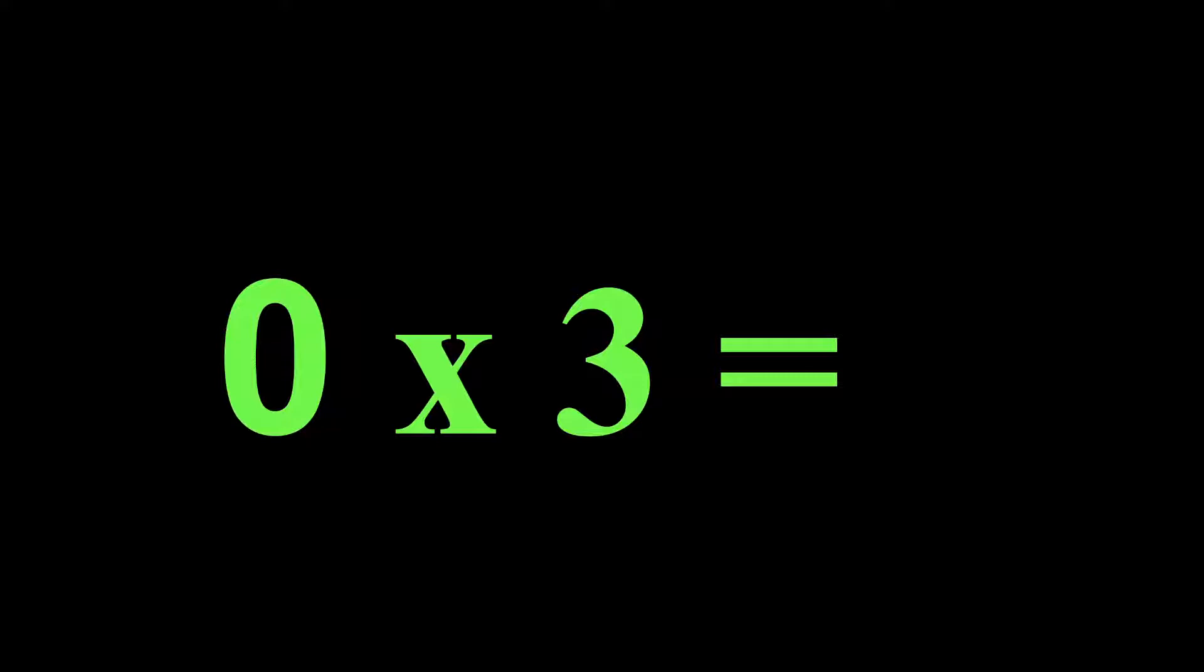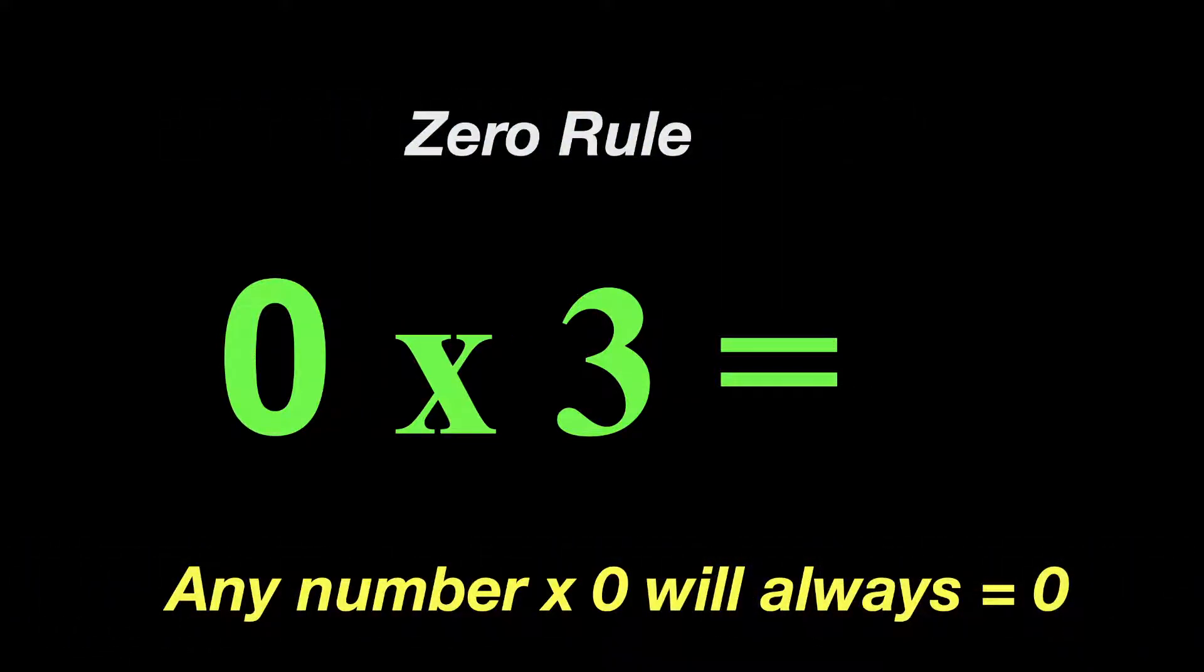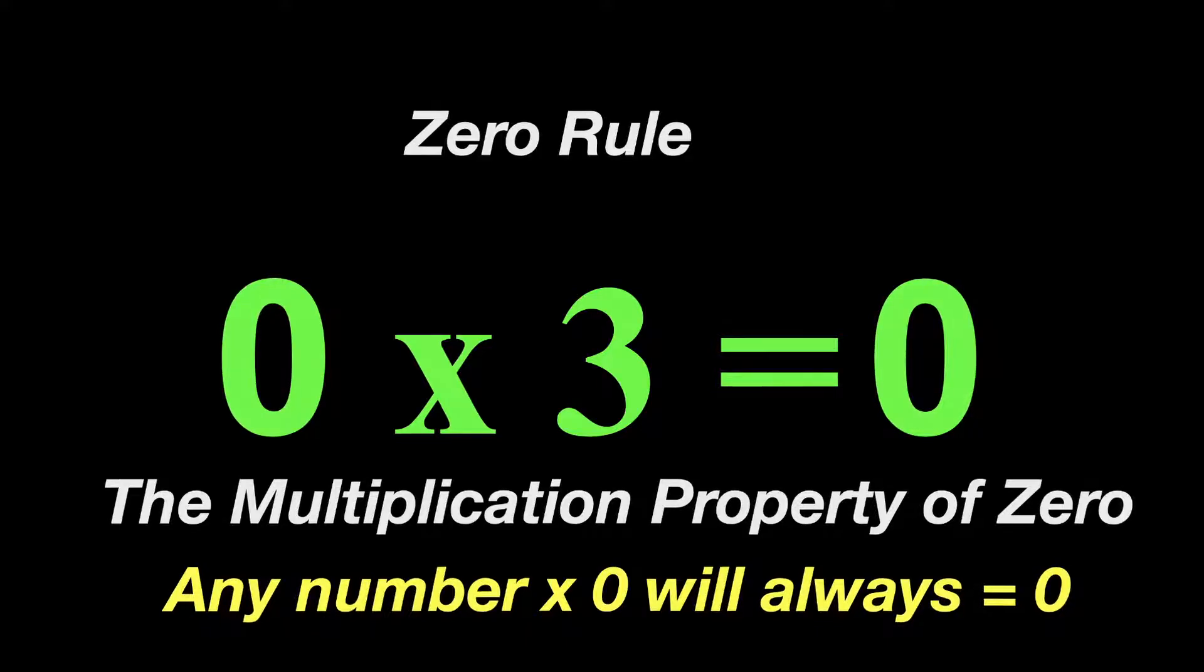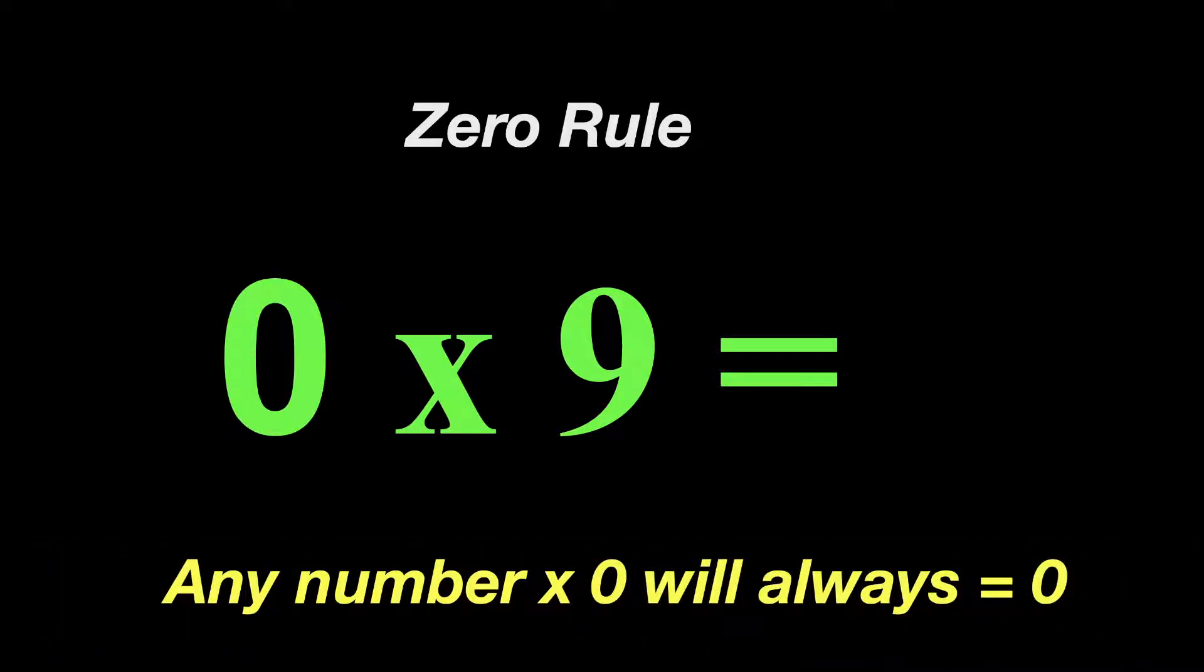So 0 times 3, that would be the 0 rule, which is any number times 0 will always equal 0. So 0 times 3 has a 0, so that just equals 0. That's easy. That's also called the multiplication property of 0, but I just like to call it the 0 rule. So 0 times 9 would be the 0 rule. Any number times 0 equals 0.